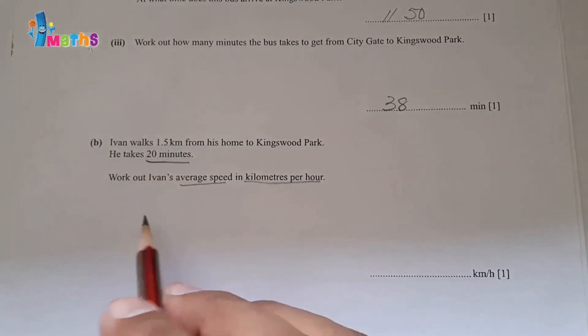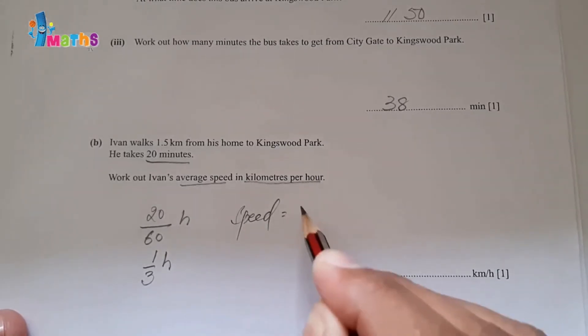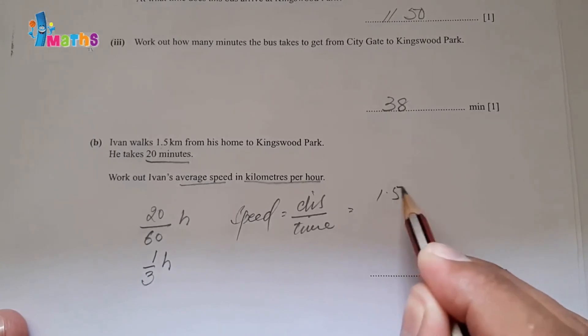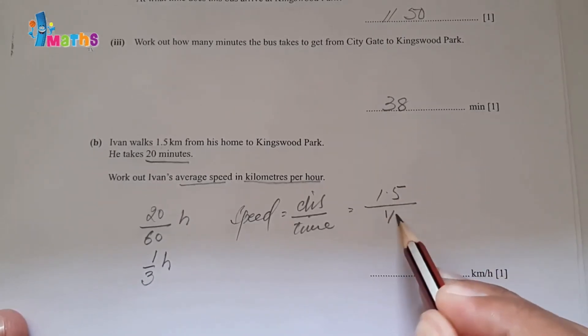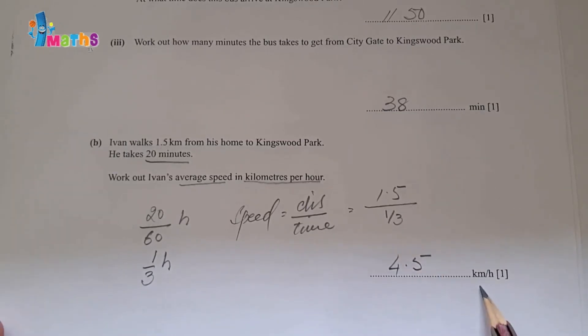So we will change the time into hours. 20 minutes will be divided by 60, and this will be in hours, which is 1 by 3 hours. Speed is equal to distance over time. Distance is 1.5 kilometers divided by 1 by 3. We'll solve with calculator: 1.5 divided by 1 over 3. This will be equal to 4.5 kilometers per hour.